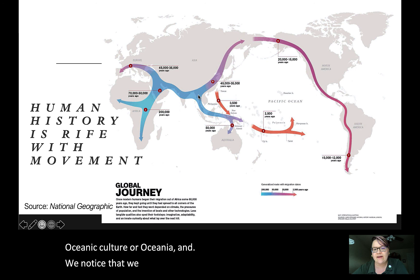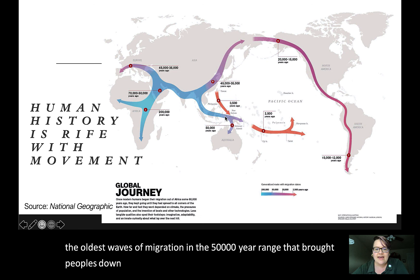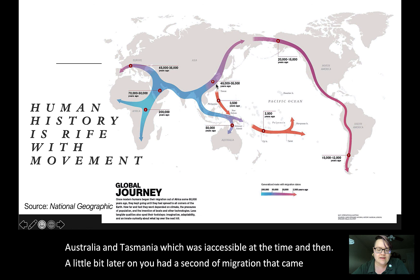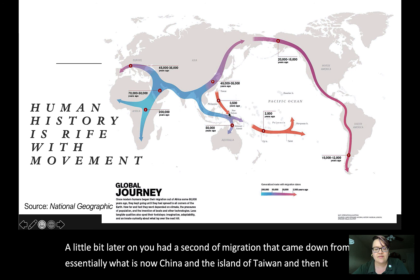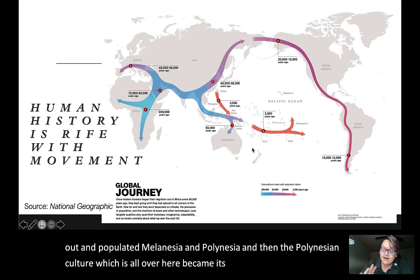We have one of the oldest waves of migration in the 50,000-year range that brought peoples down across Southeast Asia through archipelagos to Australia and Tasmania, which was accessible at the time. Then a bit later there was a second wave from what is now China and the island of Taiwan, which came out and populated Melanesia and then Polynesia — and the Polynesian culture, spread all across this region, became its own culture of migration.